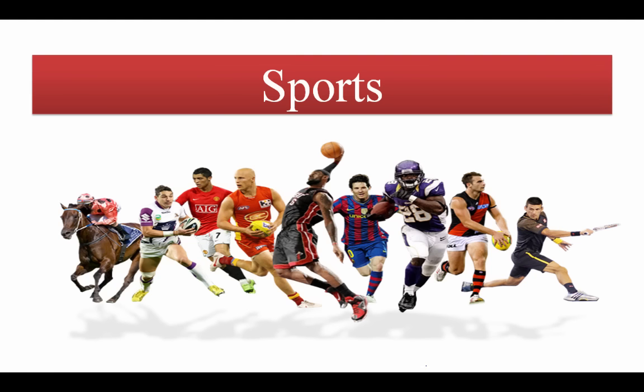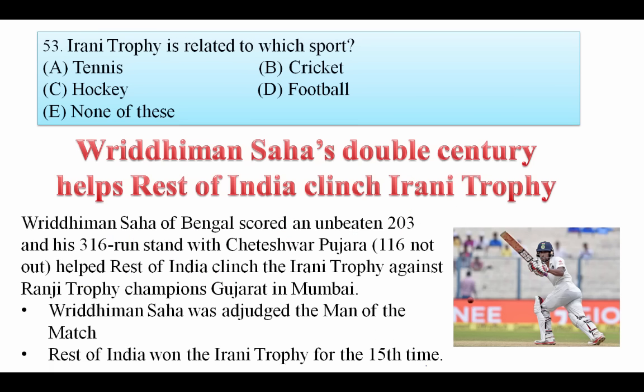Irani Trophy is related to which sport? It is related to cricket — one of the easiest questions. Vidumanyu Sahkar's double century helped Rest of India clinch the Irani Trophy. Rest of India defeated Gujarat and won this trophy, in which Vidumanyu scored a double century, and Cheteshwar Pujara scored 116 not out. They had a 316-run partnership. Vidumanyu was declared Man of the Match.